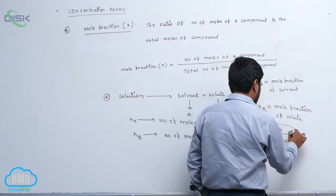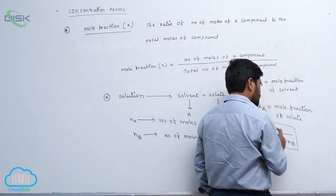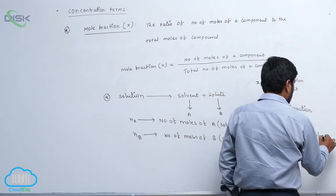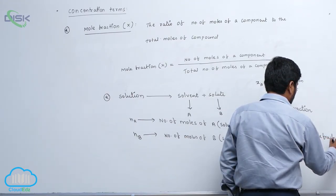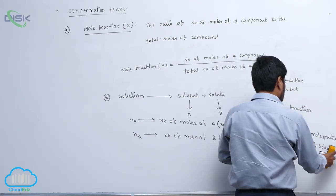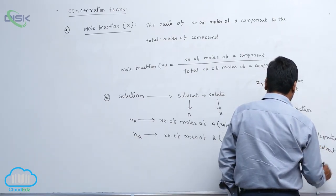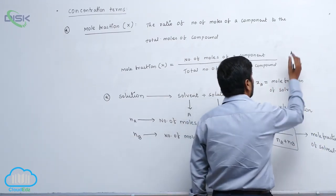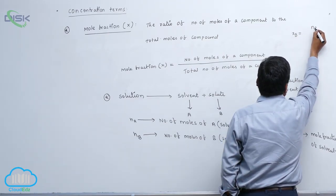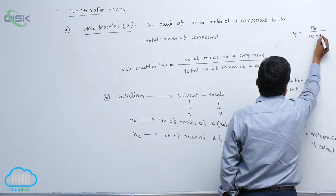This is the mole fraction of which one? Solute — mole fraction of solute. Mole fraction of which one? Solvent. Then, XB equals to number of moles of solute by total number of moles, NA plus NB.